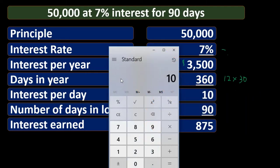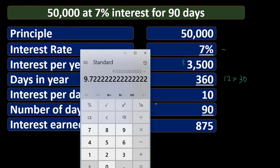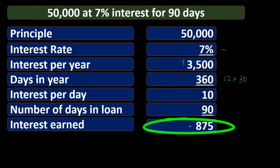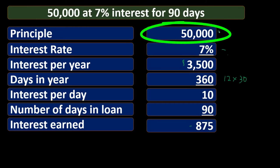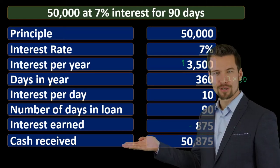If it were exactly $10 times 90 that would be $900, but what we really have is $3,500 divided by 360, which is $9.72, rounded to $10 when decimals are removed. Multiplied by 90 days that gives us our $875. So $875 is the interest earned over the 90-day period. Adding the original $50,000 loan amount to the $875 gives us $50,875 received at the end of the loan term.